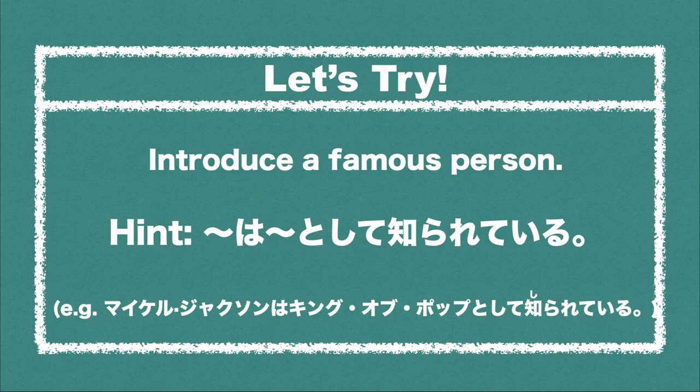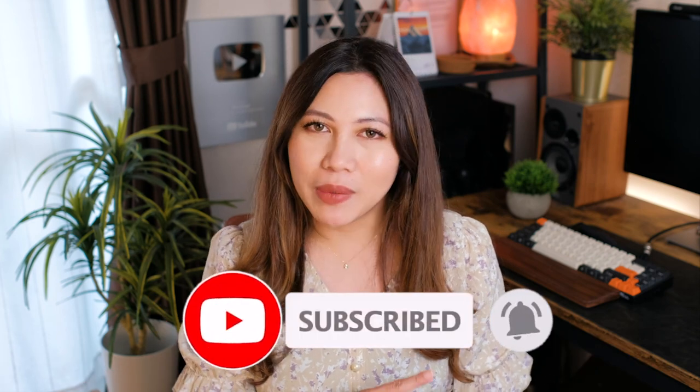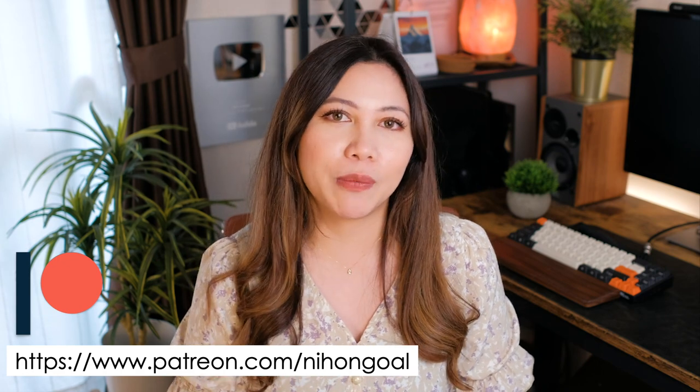Now it's time for you to try: Introduce a famous person using the pattern 何々は何々として知られている. For example: マイケル・ジャクソンは キング・オブ・ポップとして知られている. Please write your answers in the comment section below. はい、お疲れ様でした! 今日のレッスンはどうでしたか? 役に立ったら ライクボタンを押してください. I hope you learned something today. Make sure to subscribe and turn on the notification bell so you don't miss any future lessons. If you want to support this channel, please consider becoming my patron. またね!